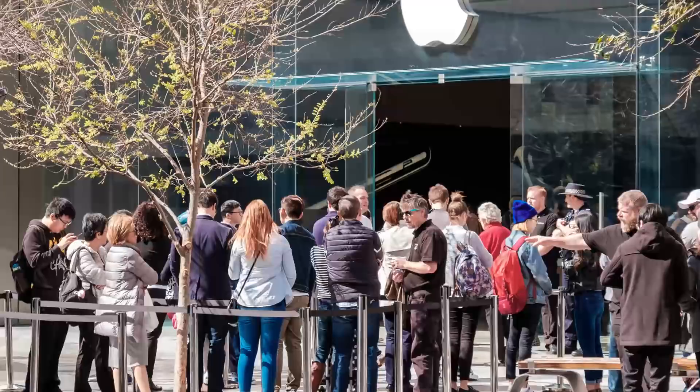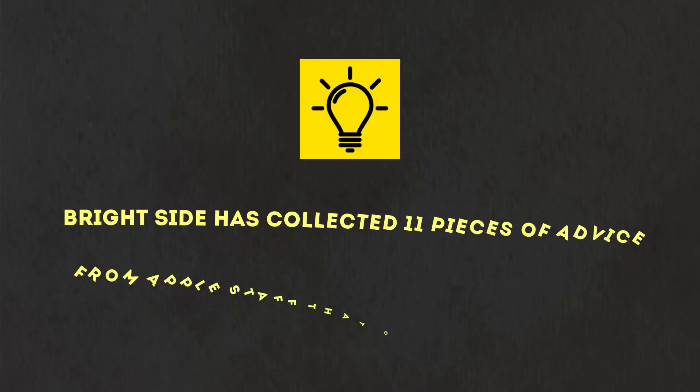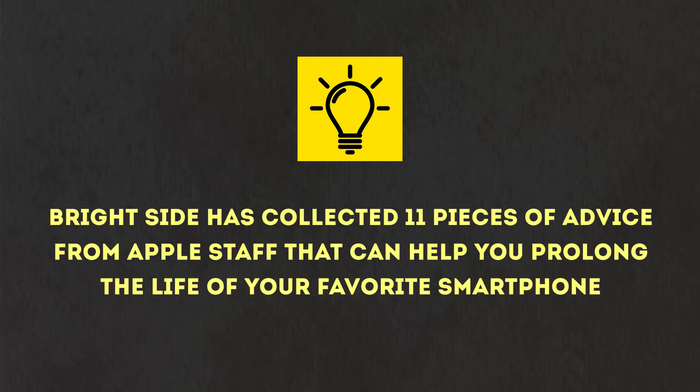Apple staff reveal 11 mistakes iPhone users make. Every time we buy a new phone, we are fascinated by how ideal the device is. We don't even think that something might break. Later, we look at the dead screen and can't understand what happened. Brightside has collected 11 pieces of advice from Apple staff that can help you prolong the life of your favorite smartphone. You won't believe how many rules you have already broken.